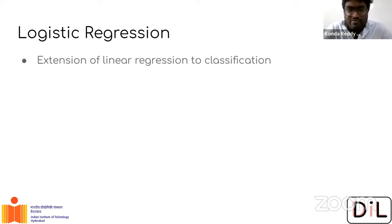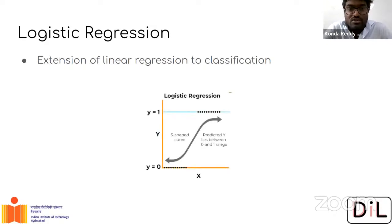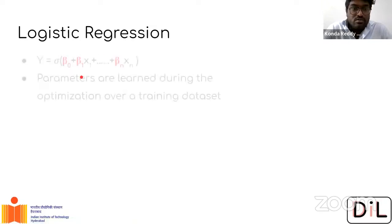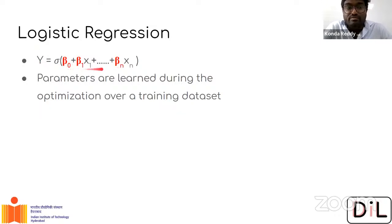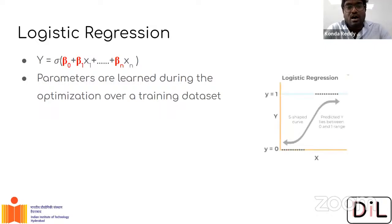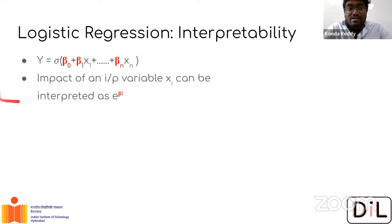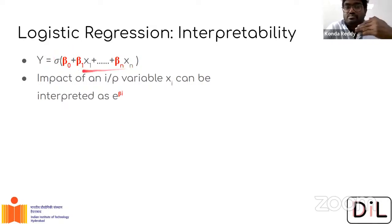Logistic regression is a straightforward extension of linear regression to classification. It takes the linear combination and passes it through a sigmoid function σ. If the output y is greater than 0.5, predict class 1; if less than 0.5, predict class 0. You can ask the same questions about how x₁ through xₙ impact y — in an exponential way via e^(βᵢ), since σ = 1/(1 + e^(-z)). The impact is visible directly via the equation, just with a different set of equations connecting input to output.